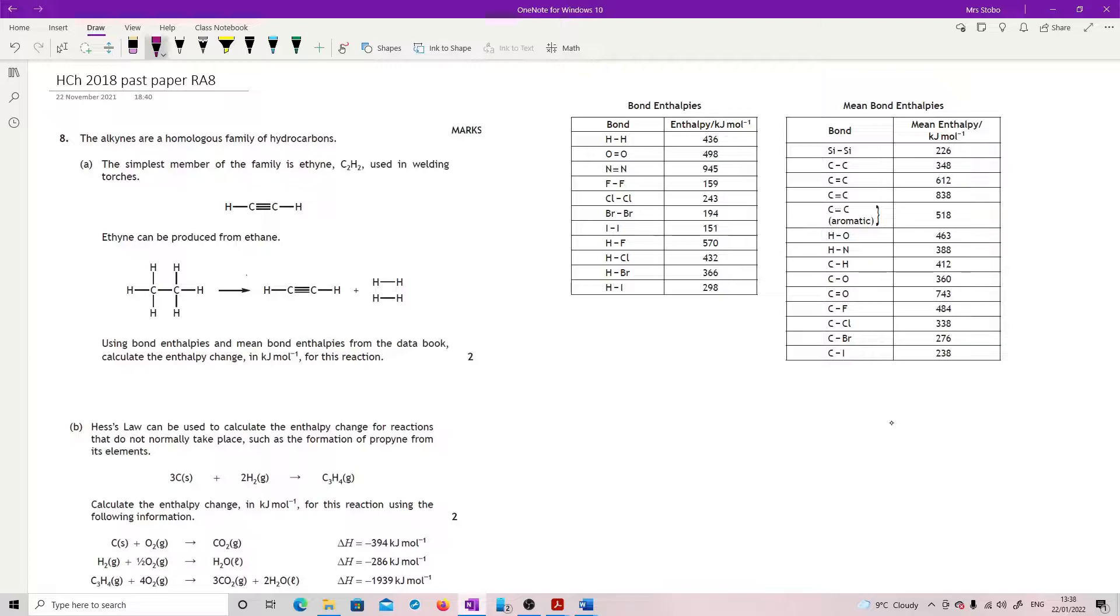Okay, question 8. The alkynes are a homologous series of hydrocarbons. Simplest member is ethane, C2H2, used in welding torches. Ethane can be produced from ethane. Using bond enthalpies and mean bond enthalpies from the data book, calculate the enthalpy change in kilojoules per mole for this reaction.